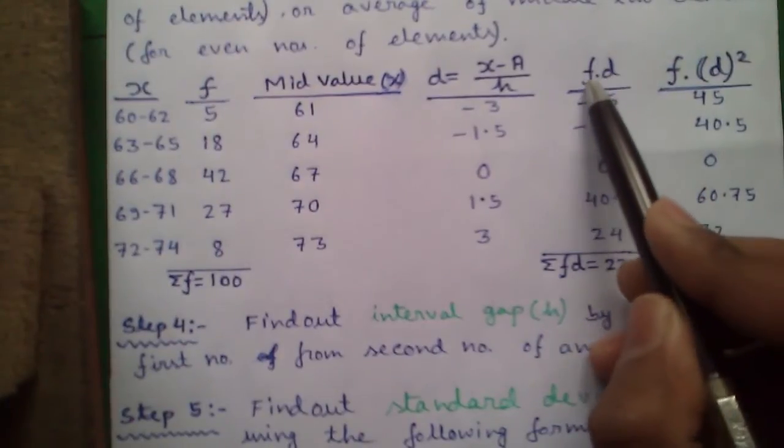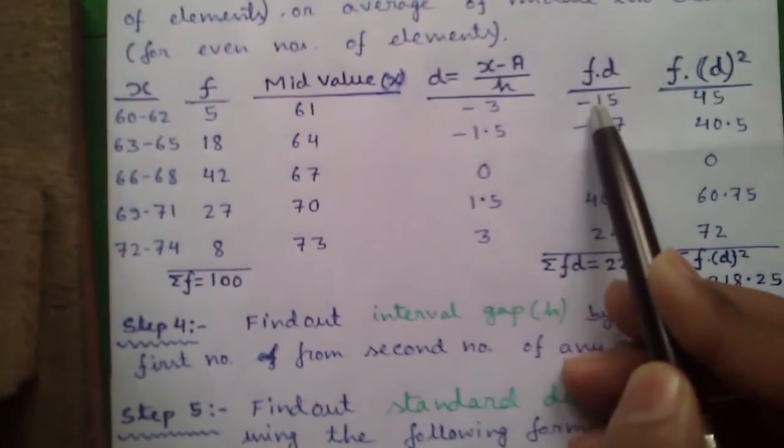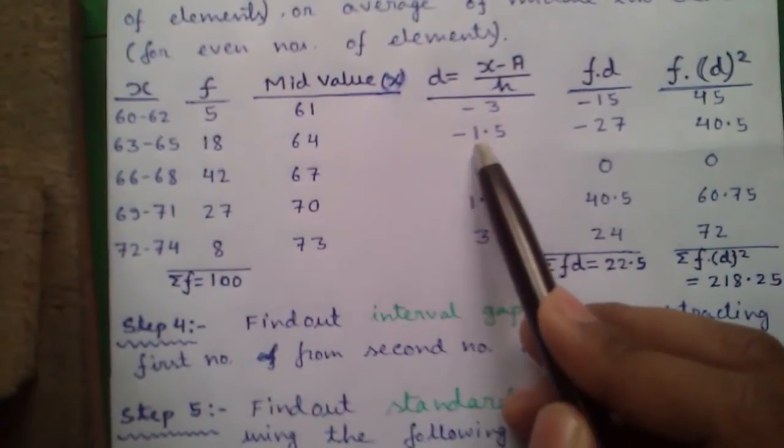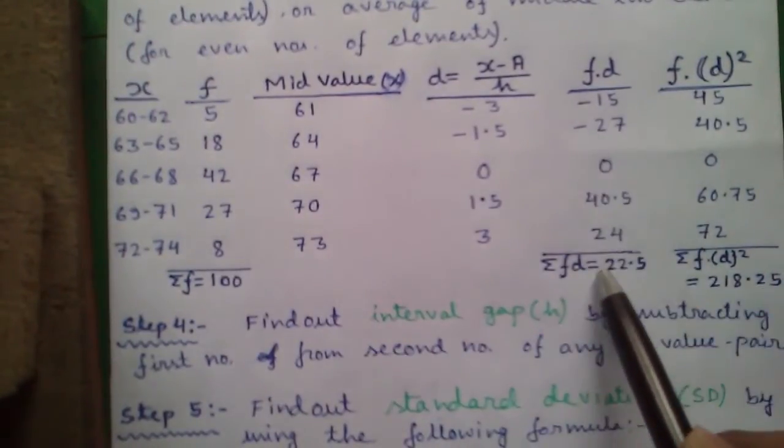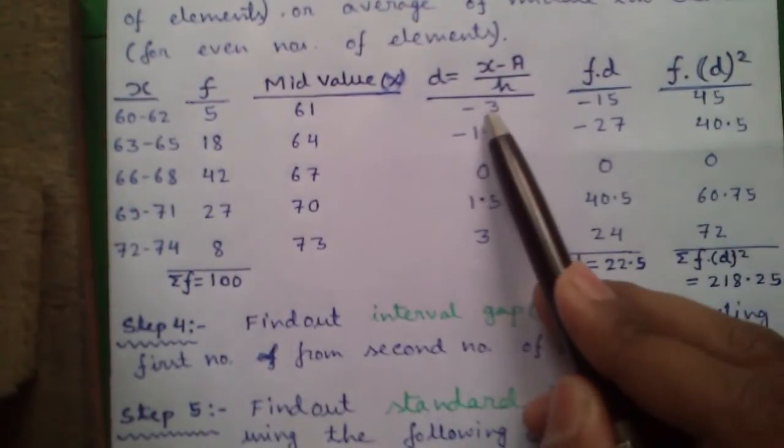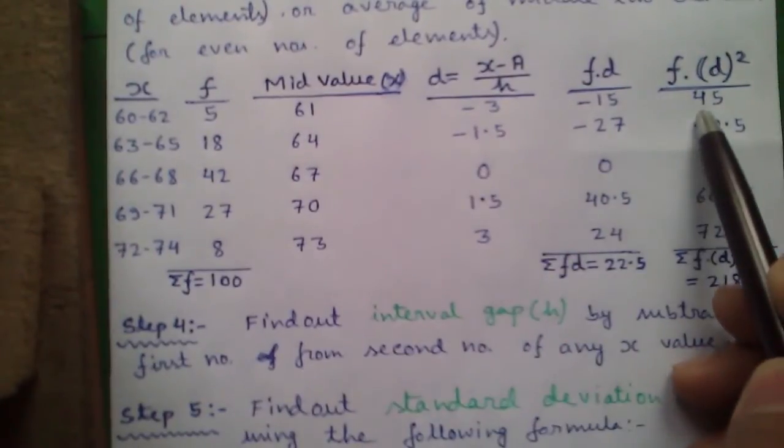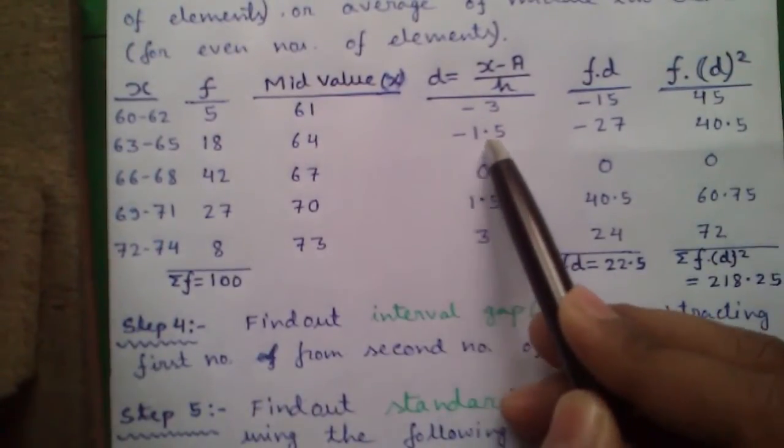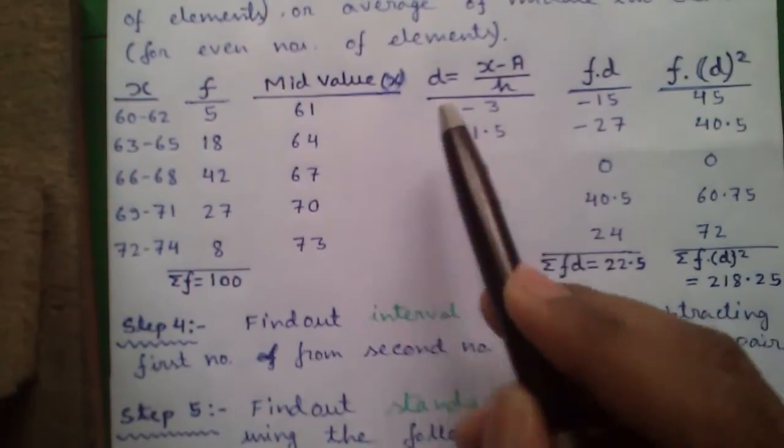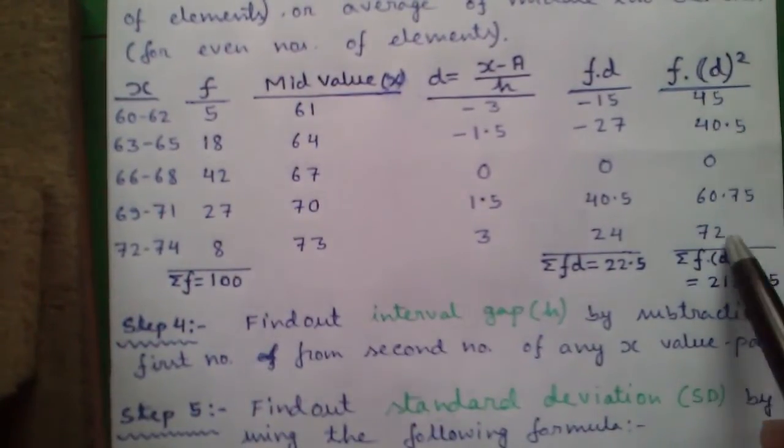Next is fd or f into d. So 5 into minus 3 is minus 15, 18 into minus 1.5 is minus 27, and so on. Next f into d square. So d square is 9 and 5 into 9 is 45. Similarly minus 1.5 whole square is 2.25 and 18 into 2.25 is 40.5 and so on.